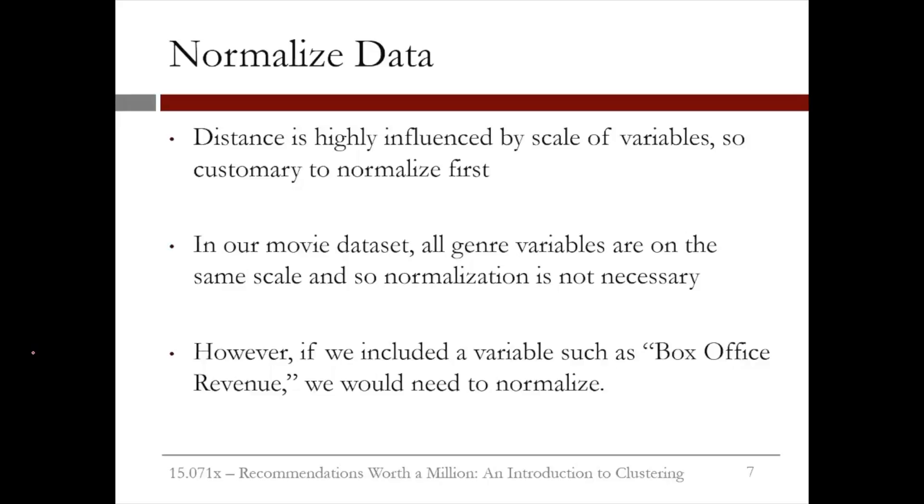To handle this, it's customary to normalize the data first. We can normalize by subtracting the mean of the data and dividing by the standard deviation. We'll see more of this in the homework. In our movie dataset, all of our genre variables are on the same scale, so we don't have to worry about normalizing. But if we wanted to add a variable like box office revenue, we would need to normalize so that this variable didn't dominate all of the others.